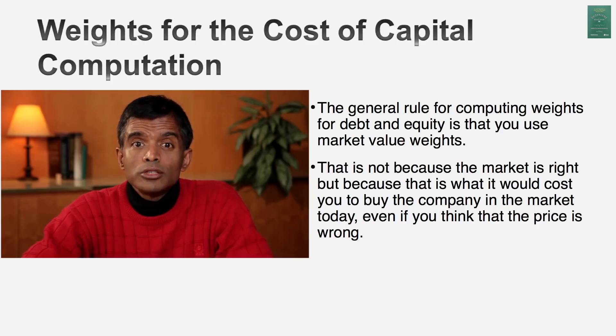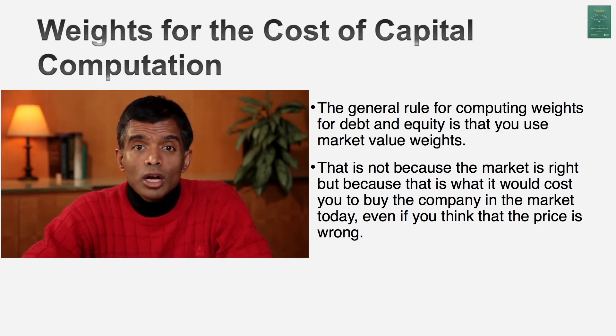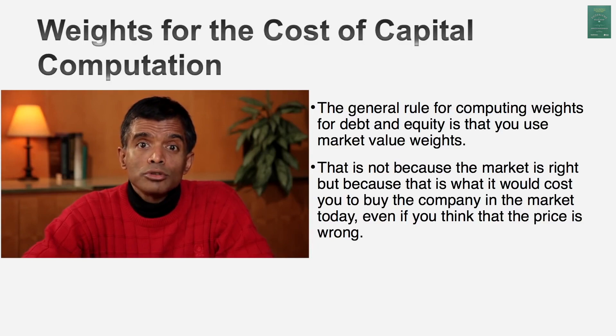Now that we have a cost of equity and a cost of debt, we've got to bring them together in an overall cost of capital, and to do that we need weights for equity and weights for debt. Those weights, if you're doing valuation, should be market value weights — as opposed to book value weights. Why market value weights? Not because we assume the market is right — that's not the right rationale. It's because that's what it would cost you to buy the company today. Whether you like the market price or not, when you go out and buy shares you have to pay the market price. The market value weights represent the cost of acquiring the entire business.